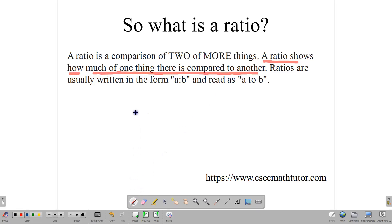Ratios are normally written in the form A colon B, and we interpret that as A to B. For example, we may say a ratio of something to something is 3 to 4, or we may say a ratio is 5 to 9. Ratios can be simplified, they can be multiplied, they can be divided, and we will use some of those skills today.